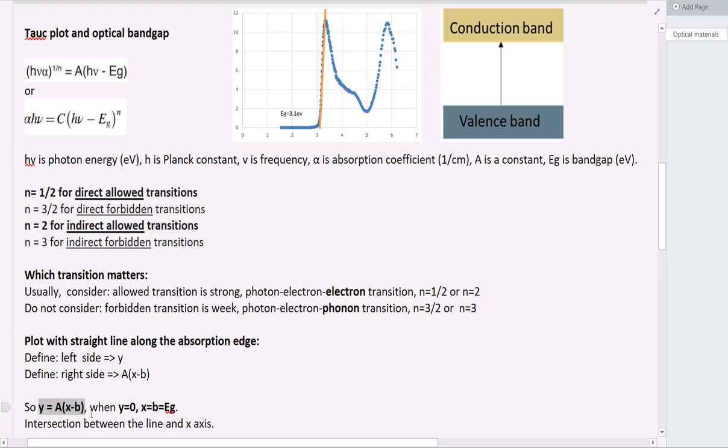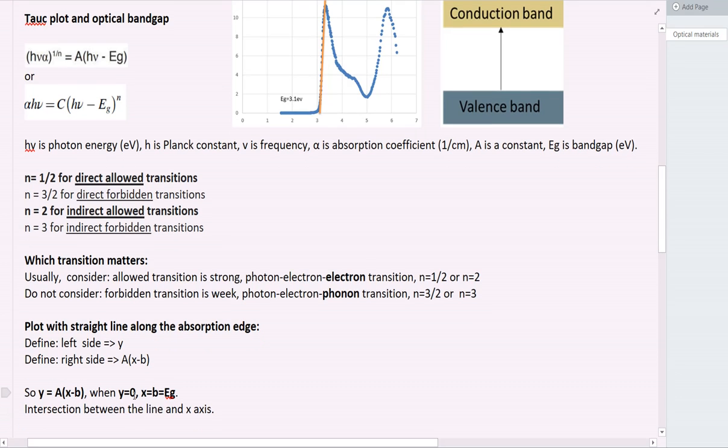It is a straight line. If we plot this, then we see that the intersection between this line and x-axis is going to be Eg. Eg is the band gap. So how does it look like for the Tauc plot?